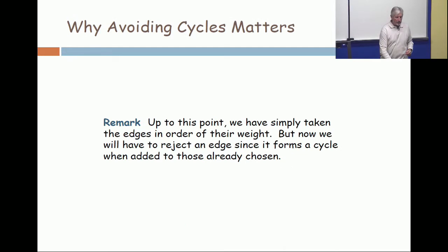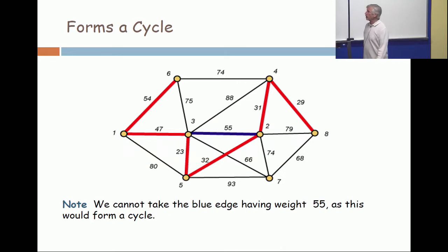Why would I reject it? Because if you take that edge, if you take that edge of 55, you form a cycle, a cycle of size three. But I don't care about the size of the cycle. Three, 3,000, 3 million, doesn't matter. If you form a cycle, you've made a mistake.